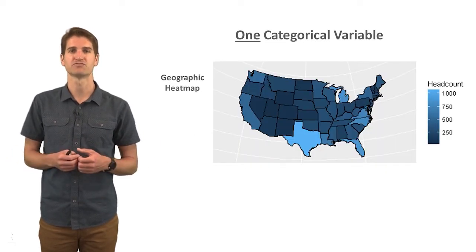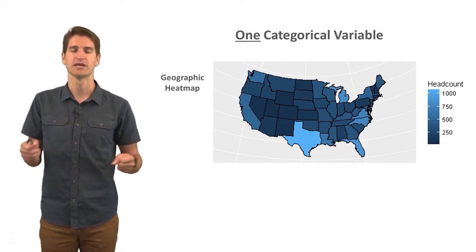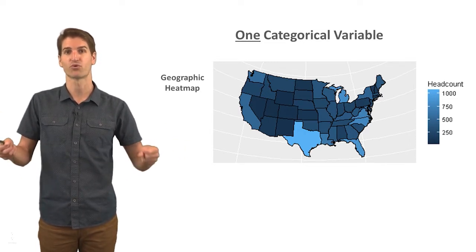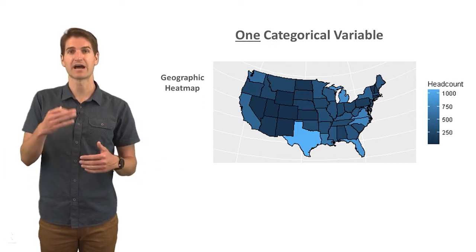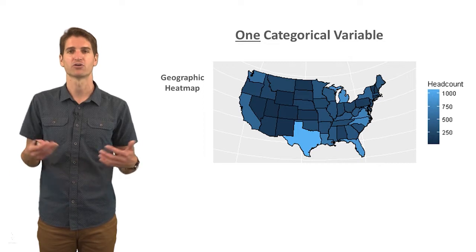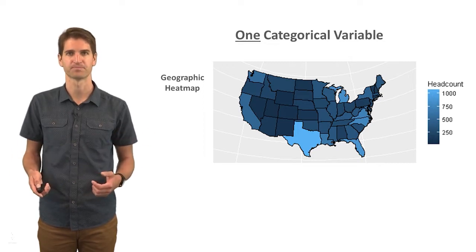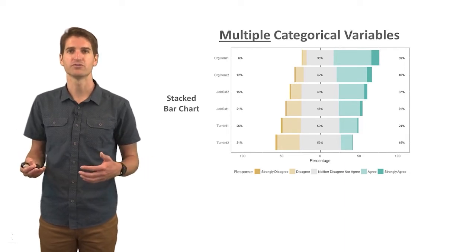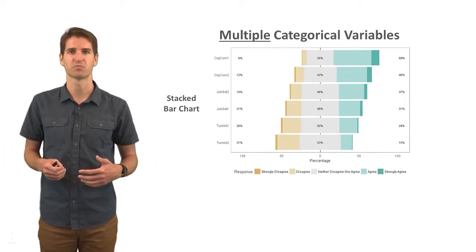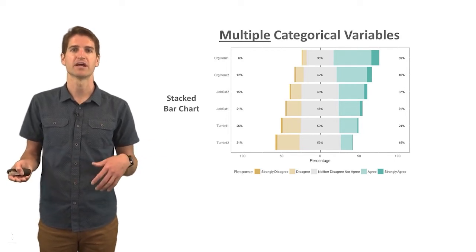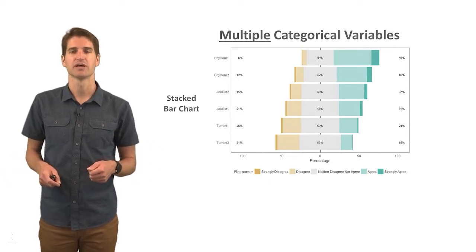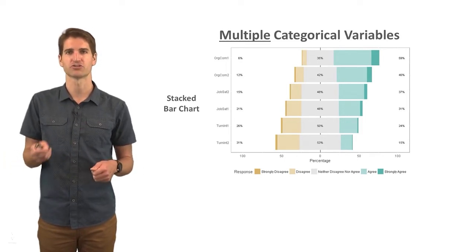We can also use geographic data — for instance, the head count for facilities in each state where our company has facilities. Here we have 48 states represented, and we count how many people work in each facility belonging to those states. This is a heat map where lighter colors mean a higher head count. If we have multiple categorical variables, we can use a trellis or lattice structure with stacked bar charts, presenting Likert-type item responses ranging from strongly disagree to strongly agree, showing the proportion of people that responded to each level.